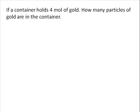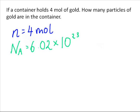So the first question is, if a container holds 4 mole of gold, how many particles of gold are in the container? We first write down what we know. So little N is the amount of mole, so in this case it's 4 mole, and NA is Avogadro's constant, which is always 6.02 times 10 to the 23.